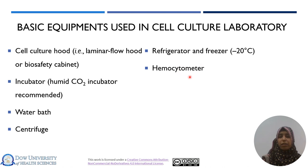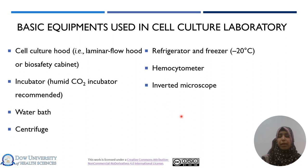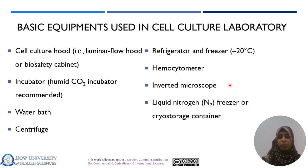Then we have a hemocytometer or automated cell counters, which are required to count viable cells. An inverted microscope is also required so that you can visualize the status of your cells — whether they are contaminated, whether they are in healthy condition, and their morphology. This is one of the most important basic equipment in a cell culture laboratory.